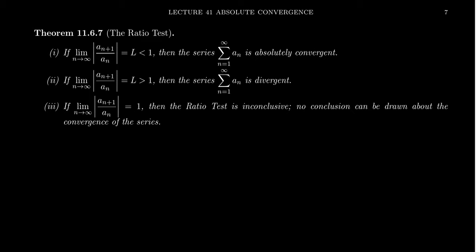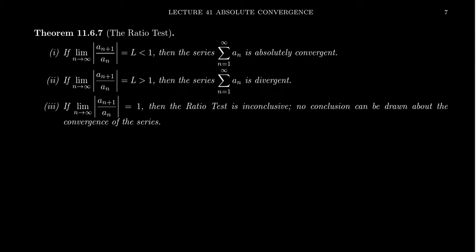The other possibility is if the limit of ratios equals one, then the ratio test is actually inconclusive. In that situation, the series could be absolutely convergent, it could be convergent but not absolutely — that is, conditionally convergent — or it could actually be divergent. I'll show you some examples of that in just a moment.